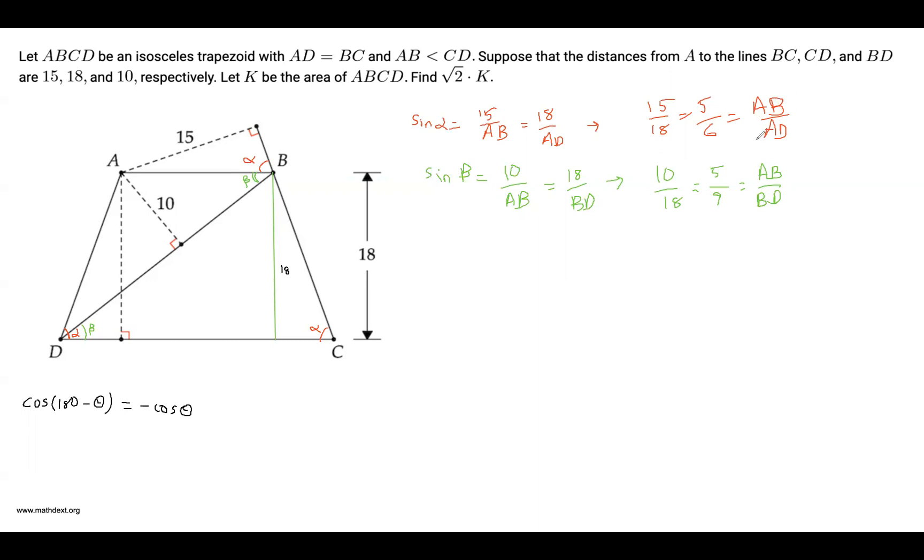And what this means is that we can label AB as 5x, AD is 6x, and BD is 9x.